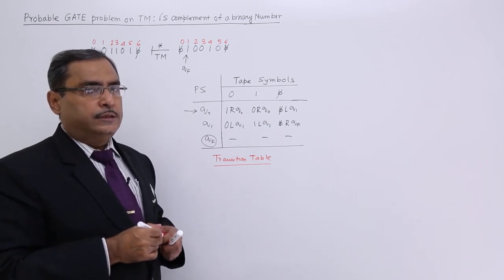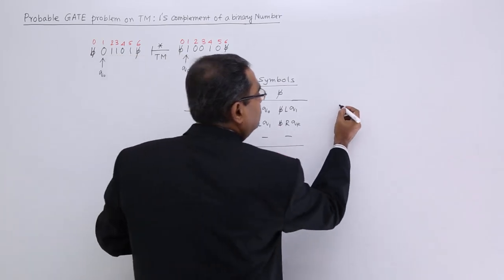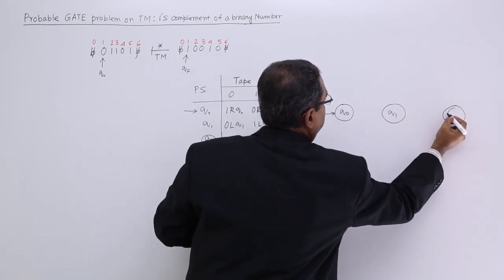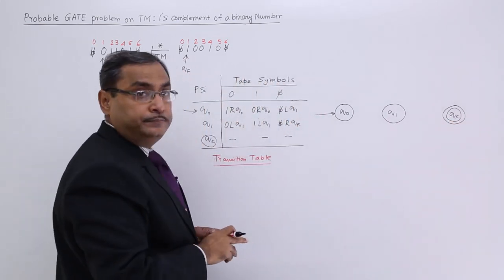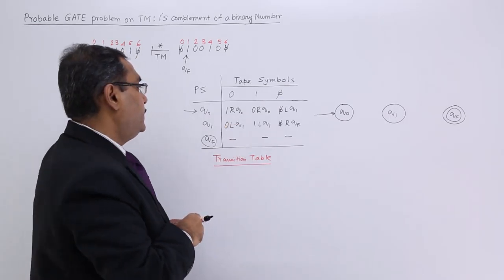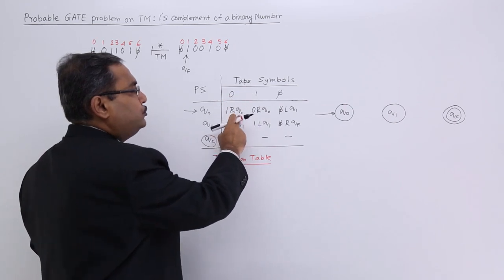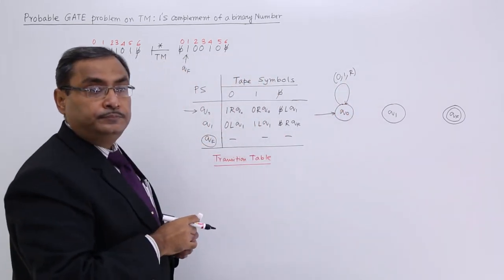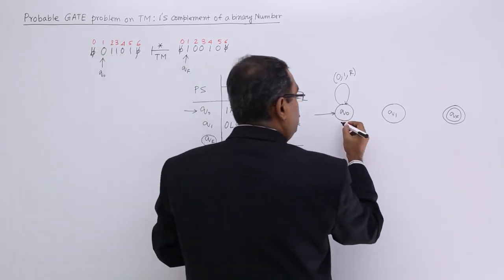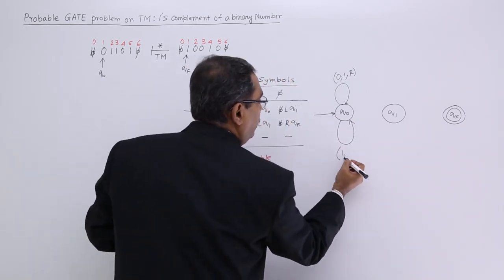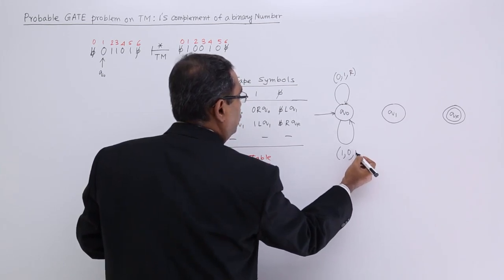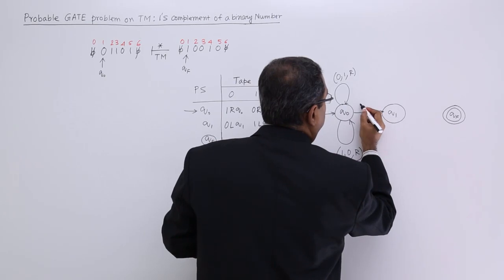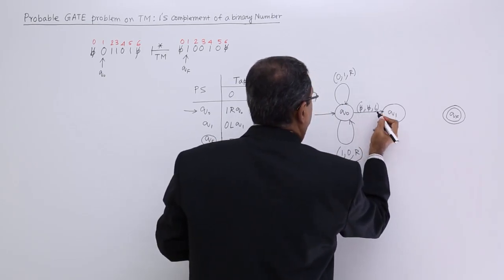Let us draw the transition diagram. I am going for Q0, Q1, and QF. This is my Q0 initial state, this is my Q1, and that is my QF, the final state. Q0, if it gets 0, then it will make it 1, move towards the right, and stay at Q0. Q0, if it gets 1, then 1 will be overwritten as 0, it will go to the right and remain at Q0. If Q0 gets blank, then blank L Q1 — blank will be replaced by blank, it will move towards the left, and the next state will be Q1.